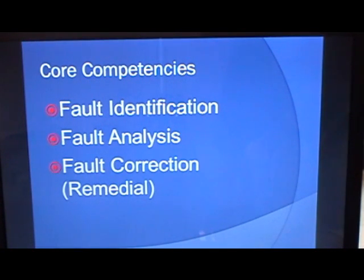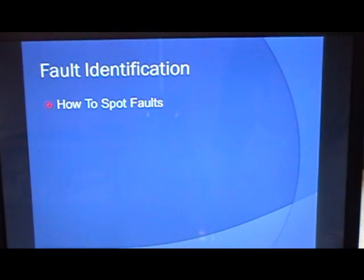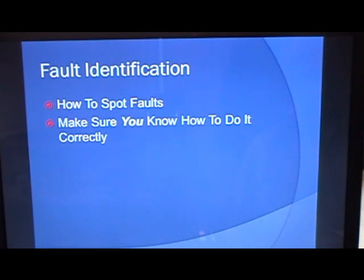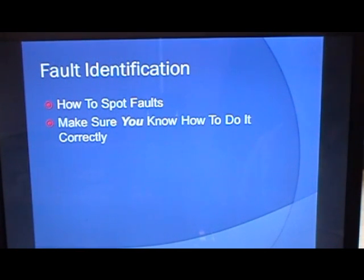I'm going to go through each part in a bit of detail so that hopefully you can understand it better. Fault identification — how to spot faults. Well, you can spot faults in a lot of different ways. Make sure first of all that you know how to do something correctly. You will have passed your part two, and you need to be conscious of how you do something, why you do it, and when you do it in order to spot a fault in a pupil's driving. If they're not doing what you would be doing, then it's a fault.